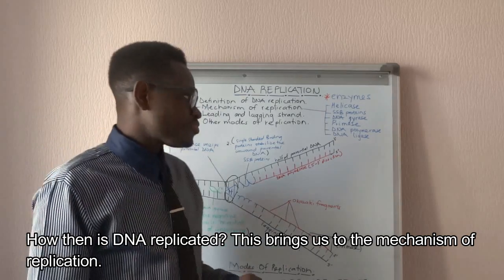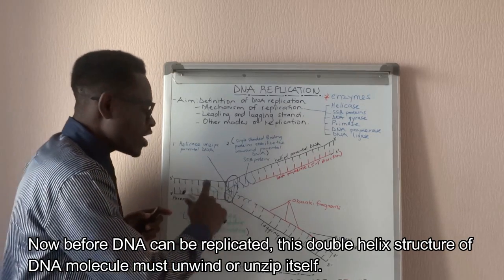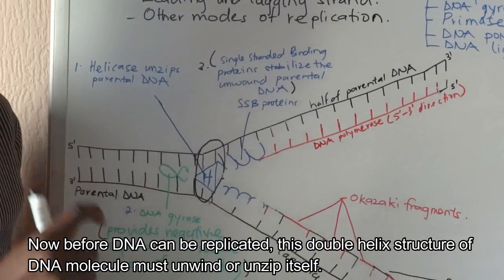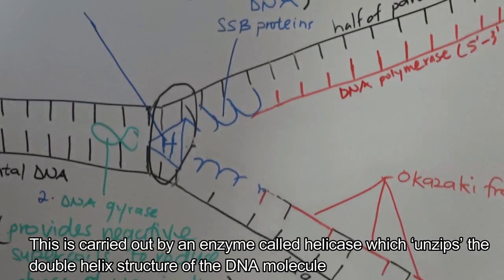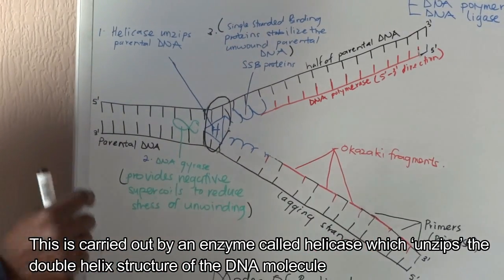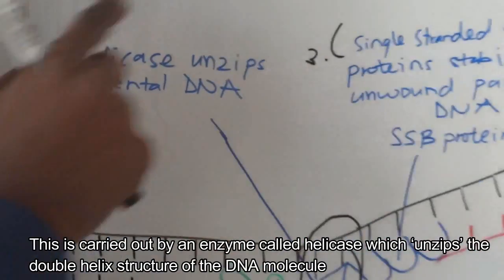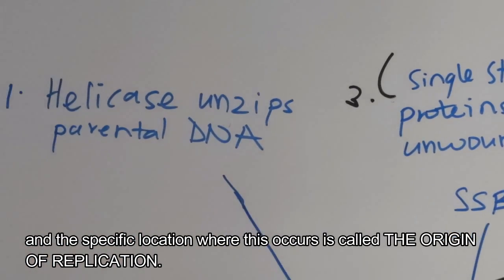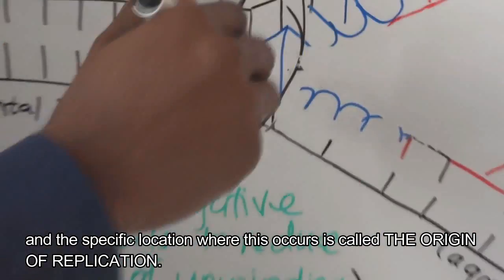How then is DNA replicated? This brings us to the mechanism of replication. Before DNA can be replicated, the double helix structure of DNA must unwind or unzip itself. It does this with the help of an enzyme called helicase. Helicase unzips the parental DNA.